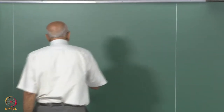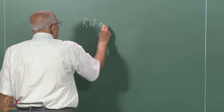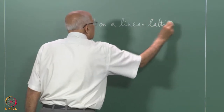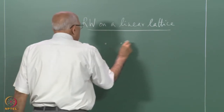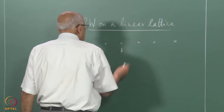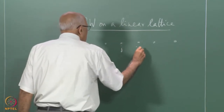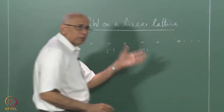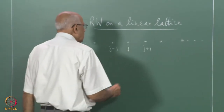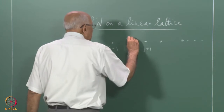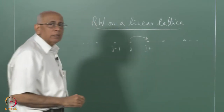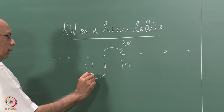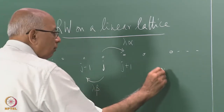Now if you recall our random walk problem on a linear lattice, we had these sites on the lattice. This was site j and this was j plus 1, j minus 1 and so on, all the way to either side. The rule of the game was that from every site j, you jumped to site j plus 1 with a mean rate lambda times alpha, and you jumped from j to j minus 1 with a mean rate lambda times beta, such that alpha plus beta equals 1.